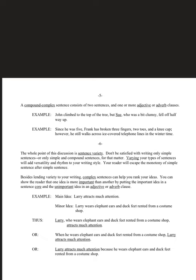Compound-complex sentences consist of two independent clauses and one or more adjective or adverb clauses. So the structure looks like: subject-verb, subject-verb, and then another subject-verb — where two are independent and one is dependent. These dependent clauses can't stand alone.